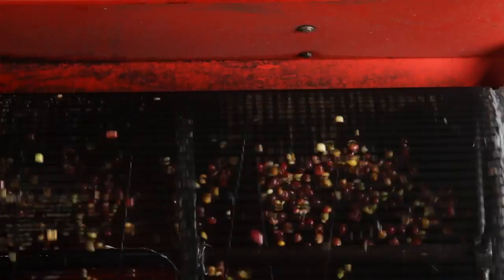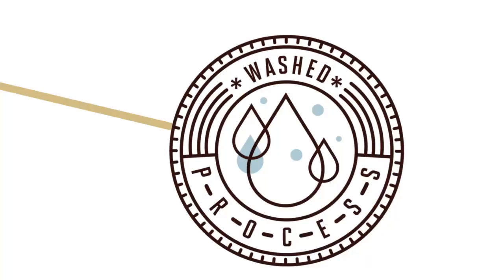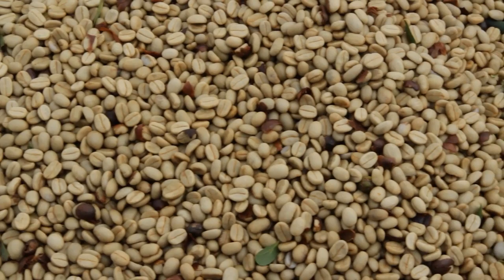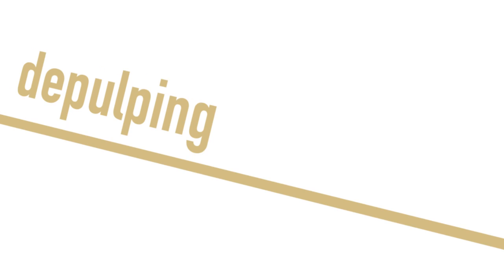Then it's going to be fermented and washed and classified in a classifying channel. Then it's dried to 12 percent moisture content and hulled and sorted. Because this wash process is dried with the pulp taken off, it's going to have much less of those pulpy, fruity flavors.